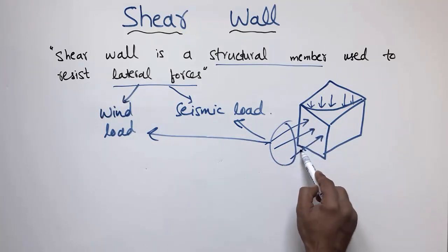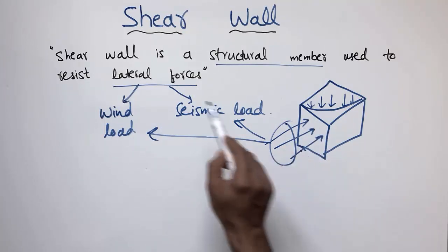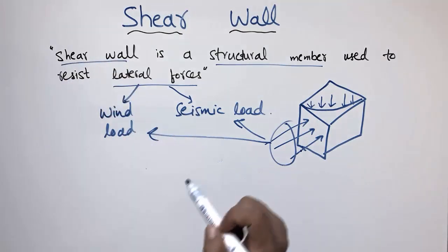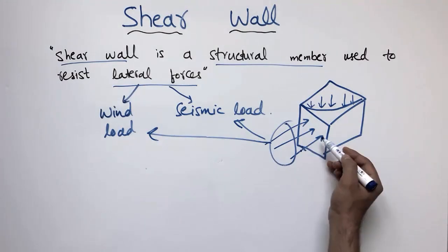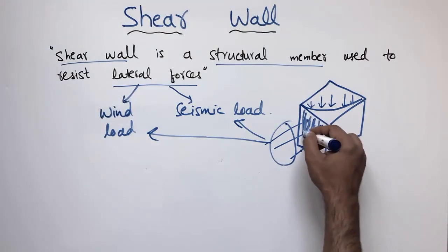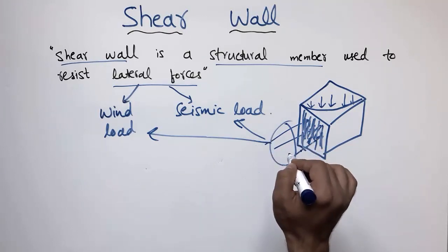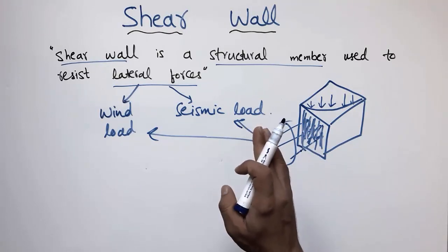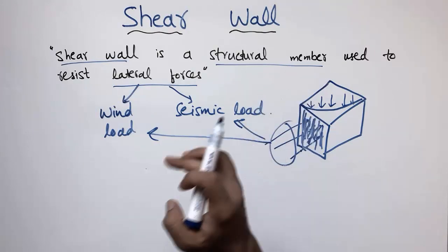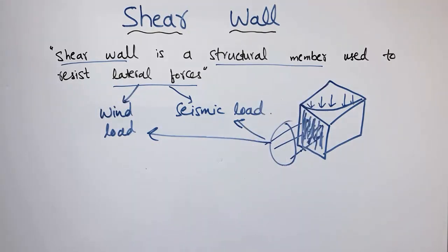To resist these horizontal lateral forces, we provide the shear wall, which is an RCC (reinforced concrete) shear wall. It increases the lateral stiffness of the building, and the building will now behave more strongly in the lateral direction to resist these loads and take these lateral forces.